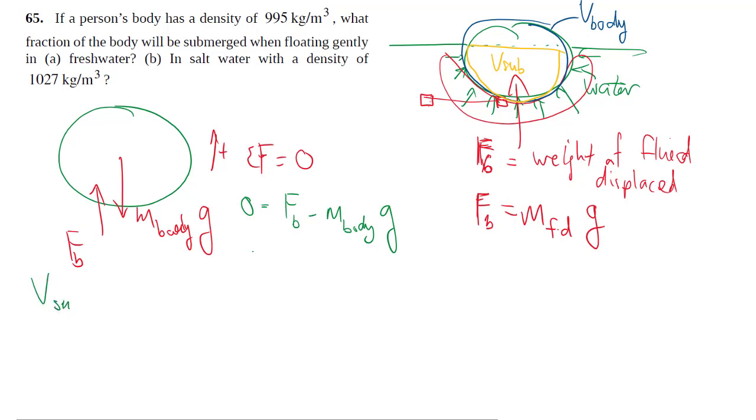To be clear, we're asked for the fraction of the body submerged, so we're talking about the submerged volume ratio to the overall body volume. How does that come about? Well, with our old friend: density equals mass over volume. That's where volume comes in.